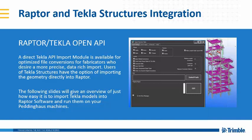A direct Tekla API import module is available for optimized file conversions for fabricators who desire a more precise, data-rich import. Users of Tekla Structures have the option of importing the geometry directly into Raptor. Sometimes I feel silly explaining how easy it is to use Raptor and Tekla together because it really is that easy. With as technological as it is, people expect a little more to do and a less seamless process.